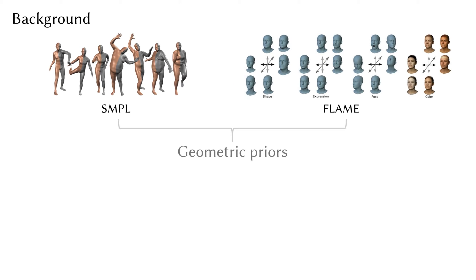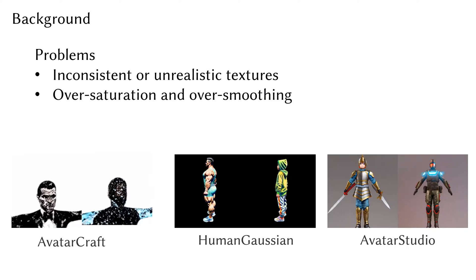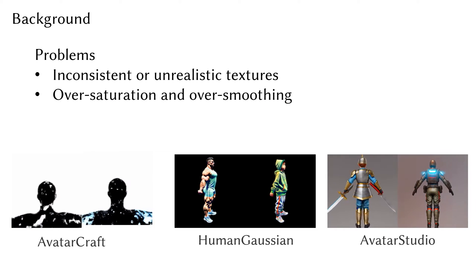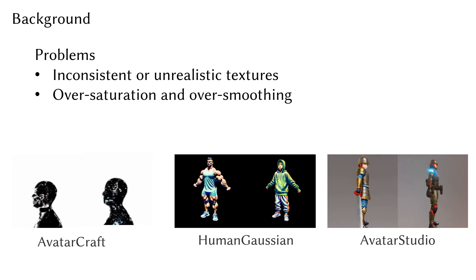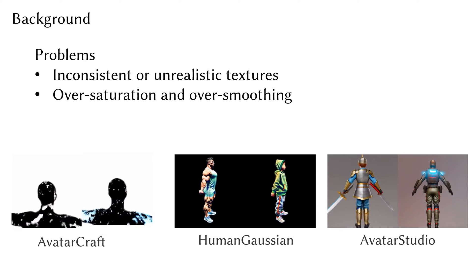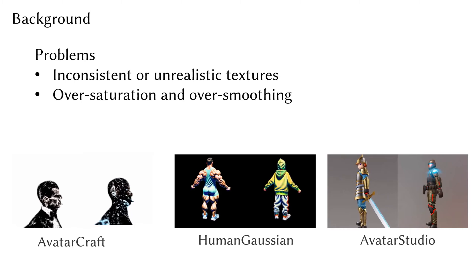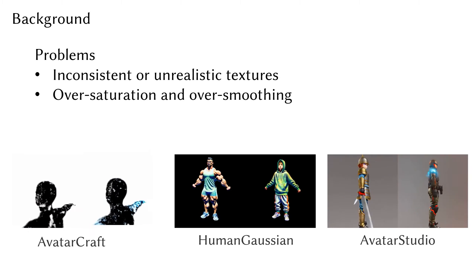Existing neural rendering-based methods, however, primarily use geometric priors as initial points for generation, with the diffusion model providing all appearance information. This can result in issues like inconsistent or unrealistic textures. Furthermore, applying SDS to a coarse initialization can lead to oversaturation and oversmoothing.